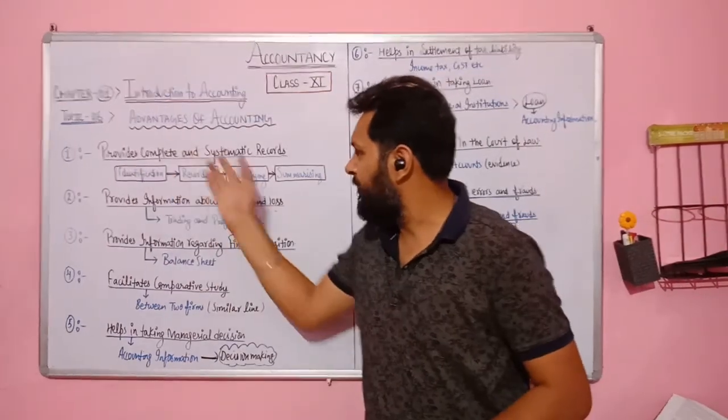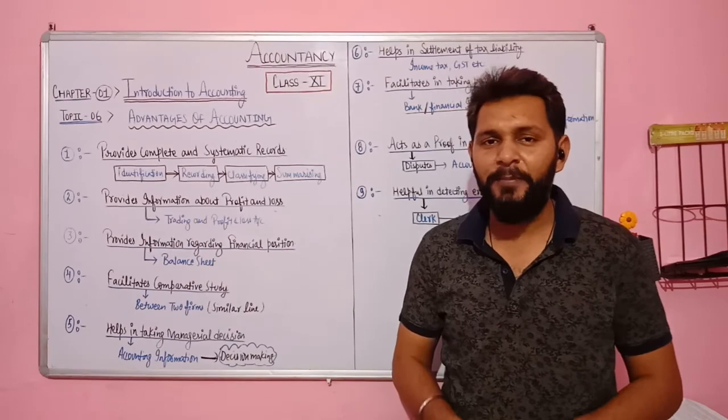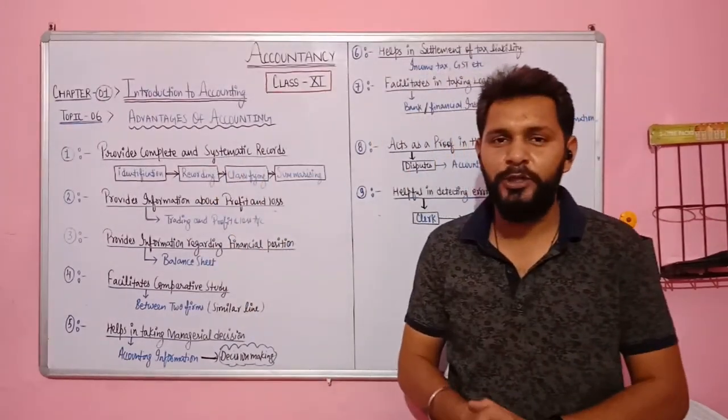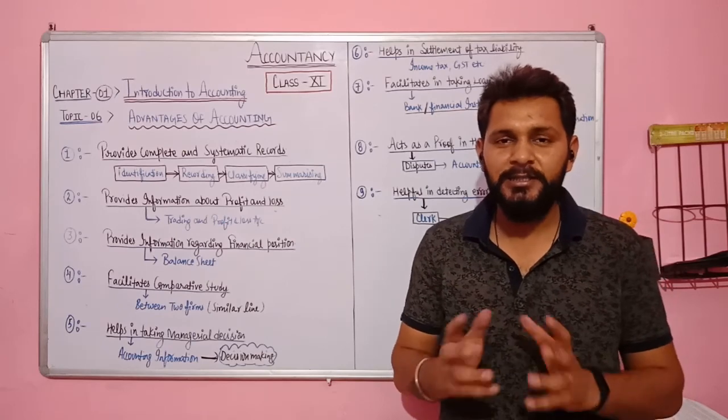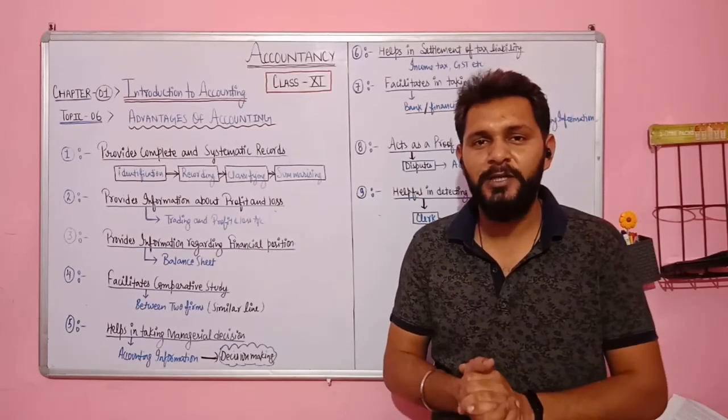The first advantage is complete and systematic record. This is the objective of accounting. What does accounting do? It keeps a complete record of your business, with which you will find at the end of the year the profit and loss and your financial position.